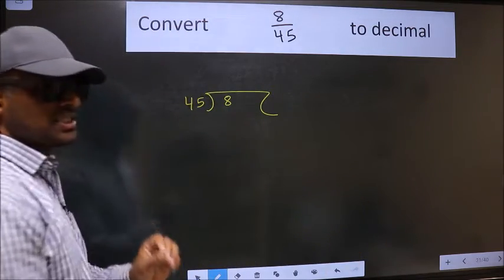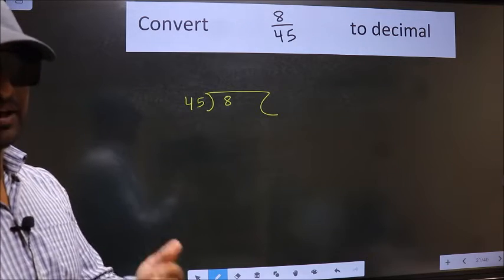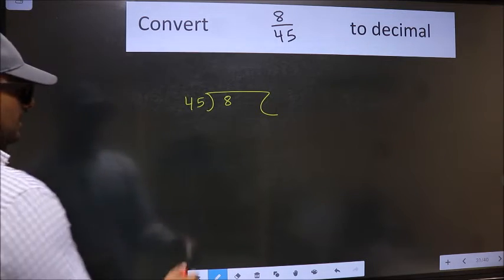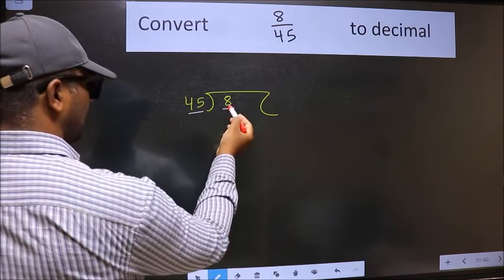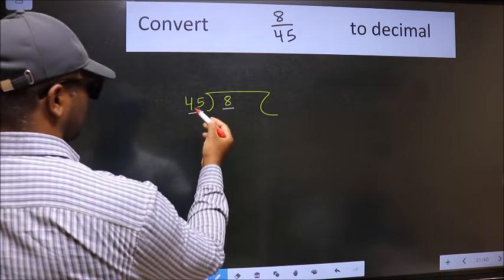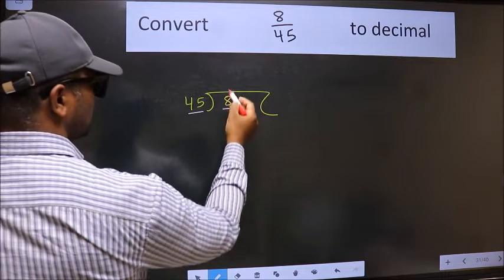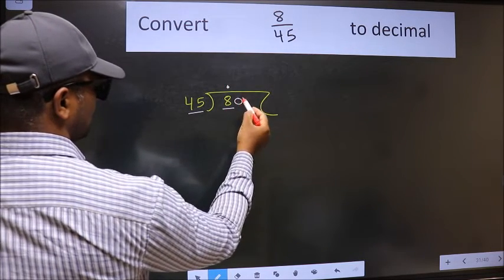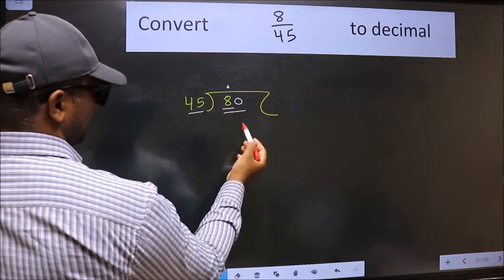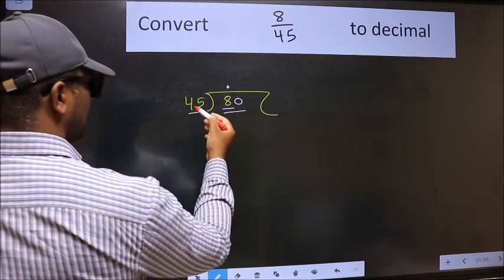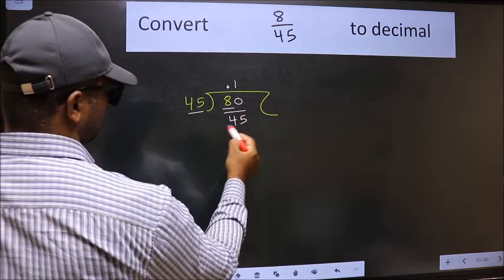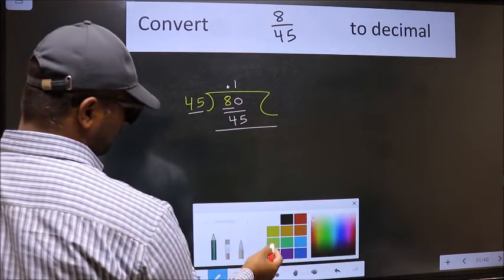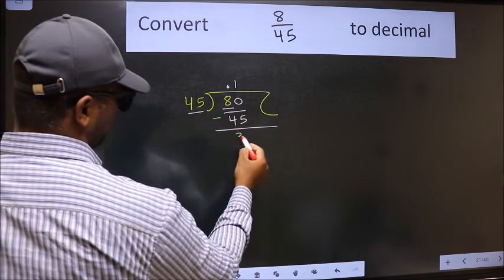This is your step 1. Next, here we have 8 and here 45. 8 is smaller than 45, so what we should do is put dot and take 0. So 80. A number close to 80 in 45 table is 45 once 45. Now we should subtract. We get 35.